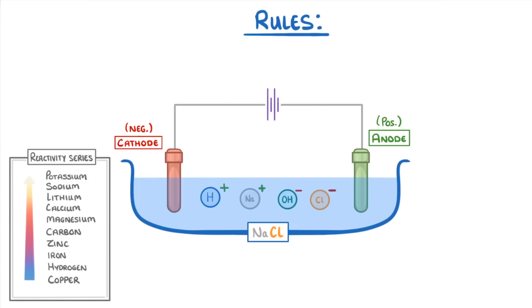So just like before, to find which of our positive ions the negative cathode will discharge, we look at our reactivity series and can see that hydrogen is less reactive than sodium. So the hydrogen ions will be the ones that get discharged by gaining electrons and forming hydrogen gas.